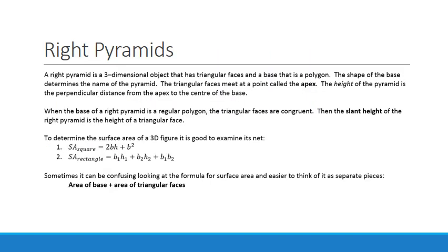Let's begin by a quick review of right pyramids. A right pyramid is a three-dimensional object that has triangular faces and a base that is a polygon. The shape of the base determines the name of the pyramid. The triangular faces meet at a point called the apex. The height of the pyramid is the perpendicular distance from the apex to the center of the base.